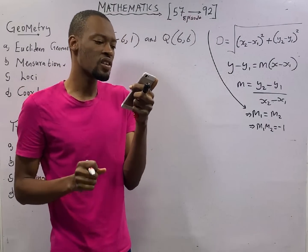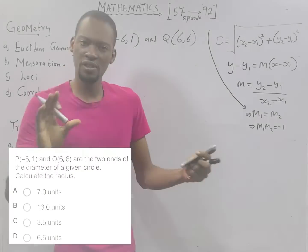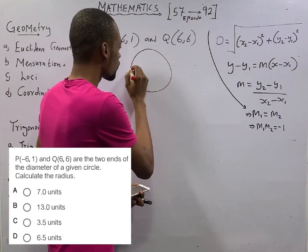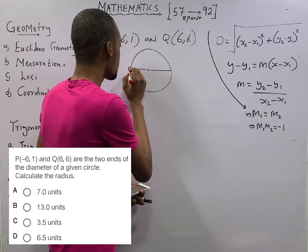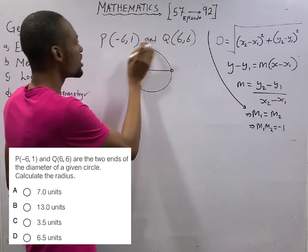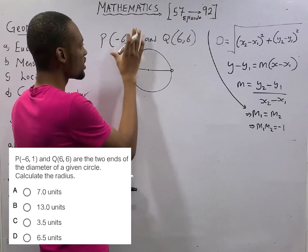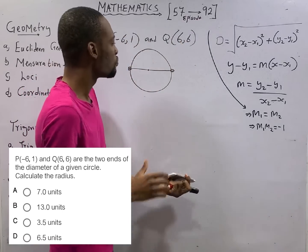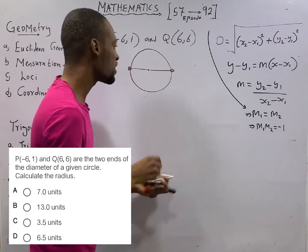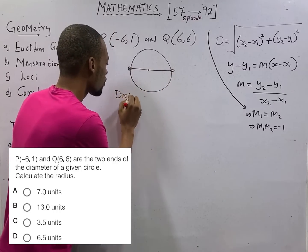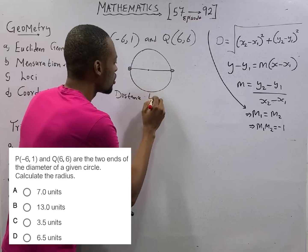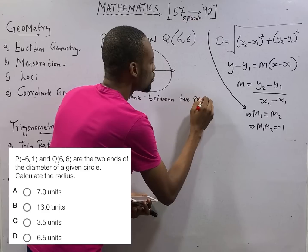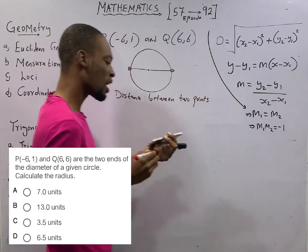This is the gradient. This is what we are given. P(-6, 1) and Q(6, 6) are the two ends of a diameter of a given circle. They are something like this. Here and here. So these coordinates you are seeing are two ends. Here is one end, here is another end. Which means between here and here we have distance between two points.